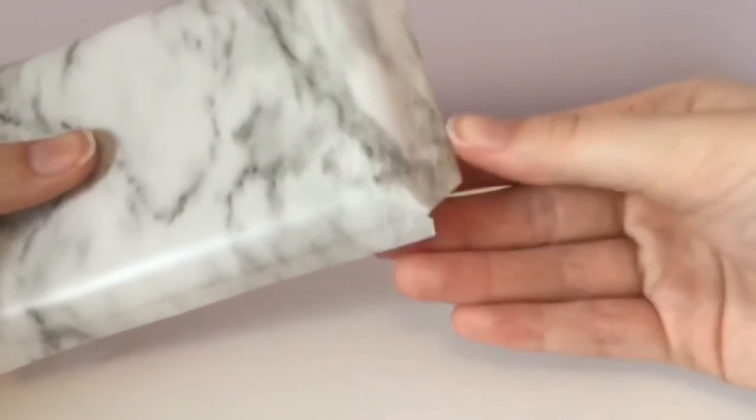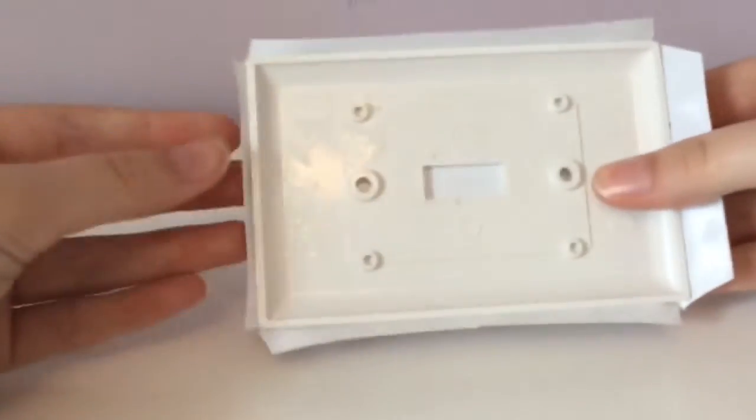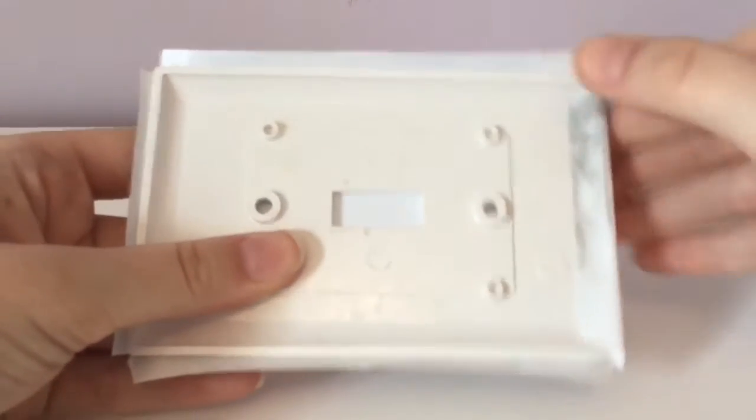Take your scissors and cut out a triangle-like shape on each corner like I've done here. And now you can take your edges and fold them over.